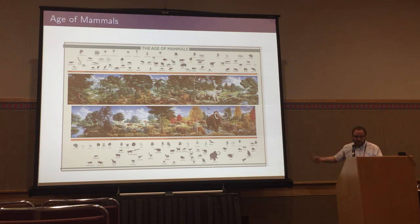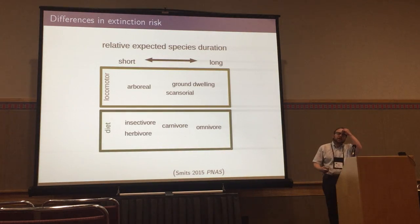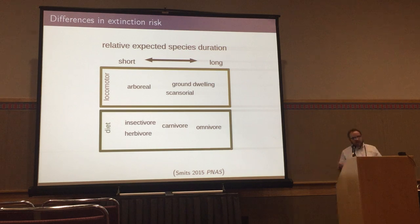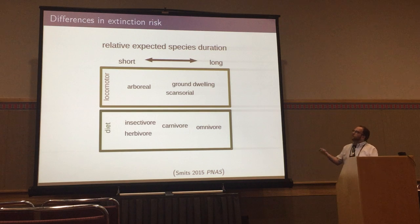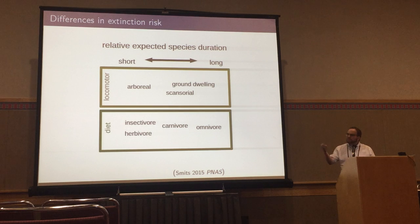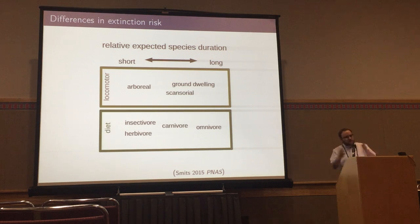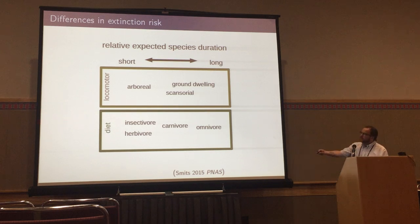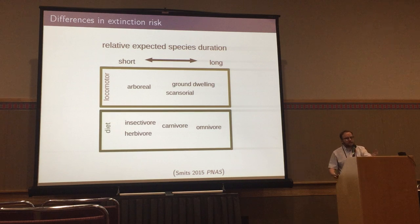For example, there are a lot of primates in the early period, but there are virtually no primates beyond us now. When we think about these functional groups, they might be originating or going extinct in different ways because of their relationship to their environment. Based on previous work, we can characterize that for locomotor or dietary adaptation. Arboreal taxa are expected to have a very short duration compared to omnivorous taxa. Duration is another way of thinking about extinction risk — very short durations mean very high extinction risk. We can say the same for diet: more specialized things have shorter durations than omnivorous taxa. This raises the question of how these functional groups are changing over time and how environmental factors matter.